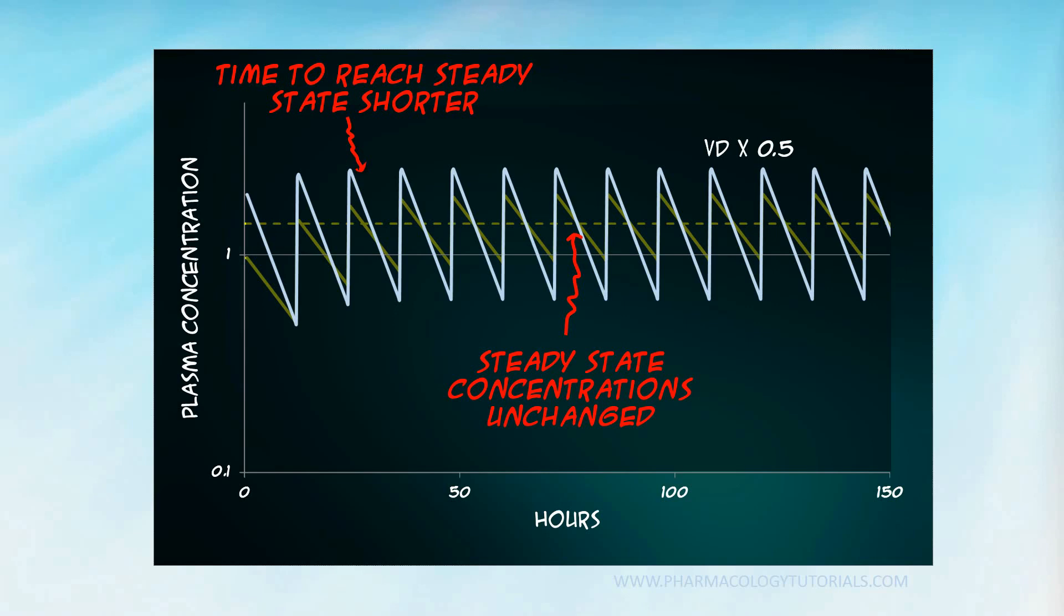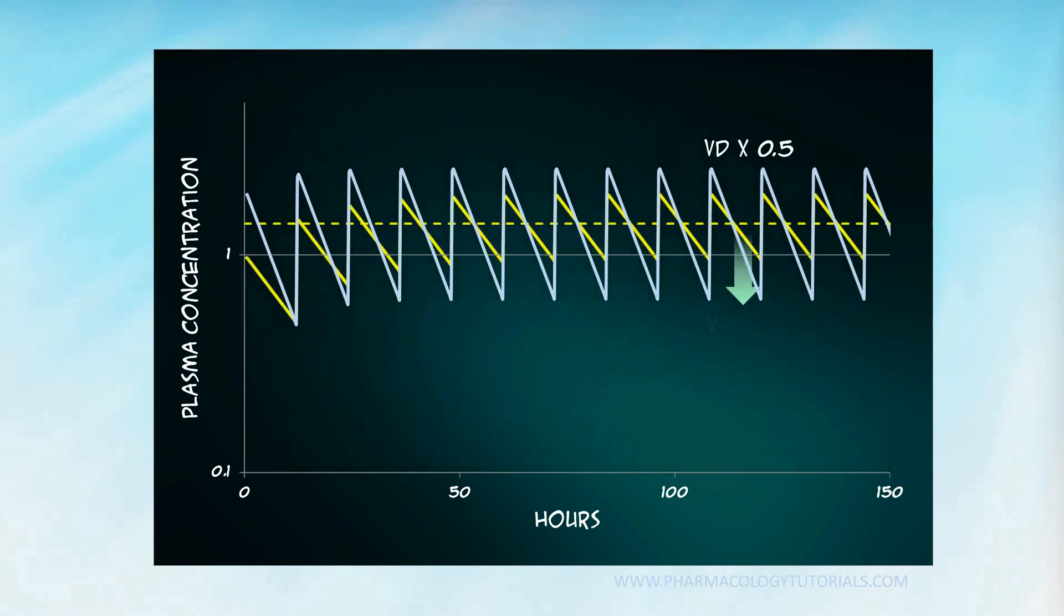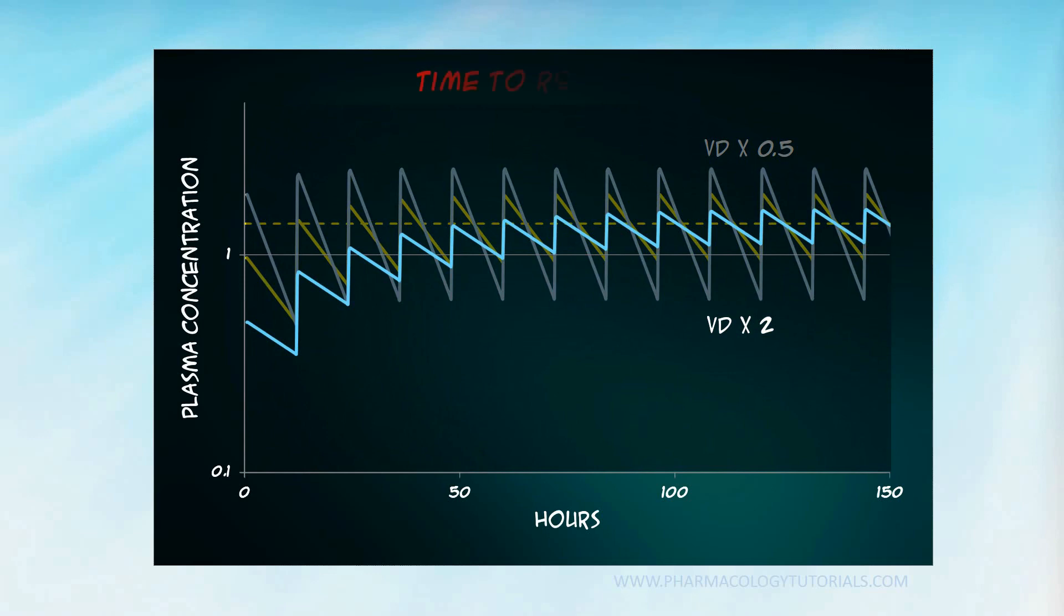If you increase the volume of distribution, the half-life is predictably increased. And the time to reach steady state is longer. But again, the steady state concentration is unchanged.